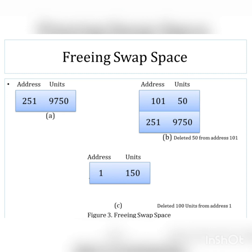After combining, the first entry has address 1 with 151 available units, and the second entry has address 251 with 9,750 available units. When freeing swap space, if we have consecutive free memory locations we must combine these entries into one.